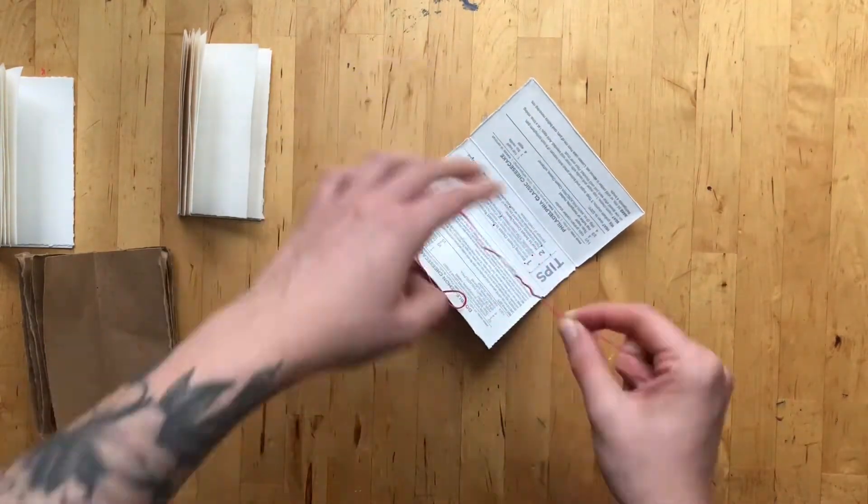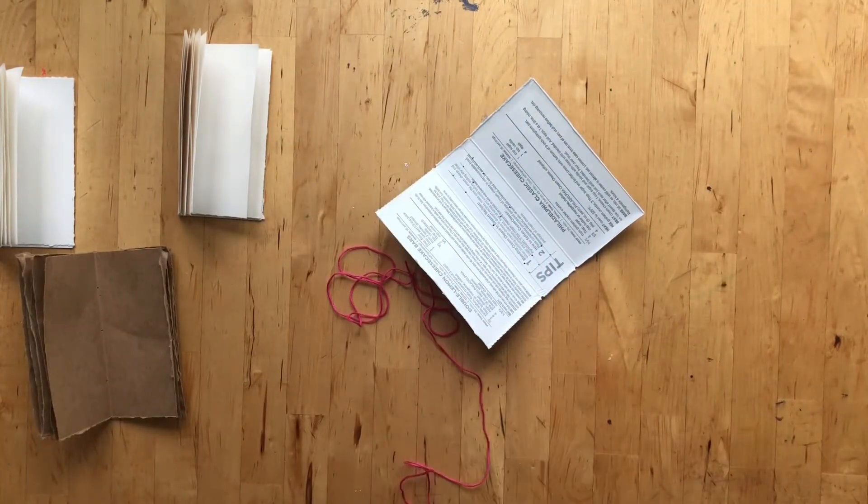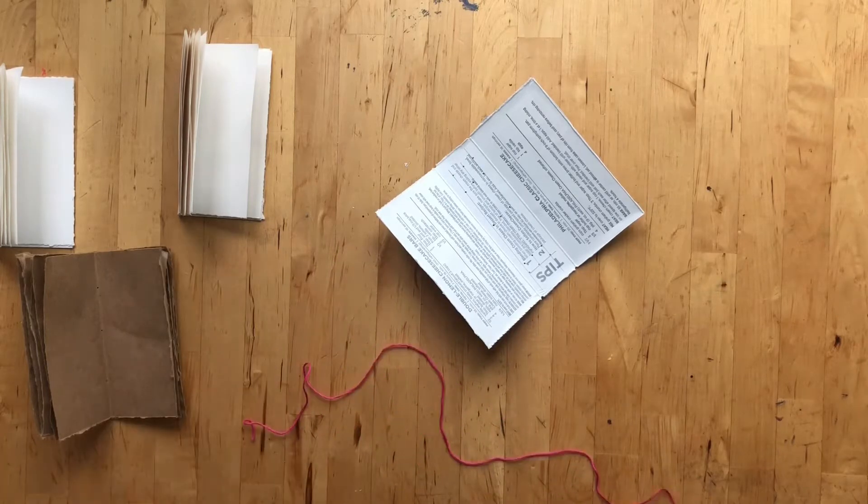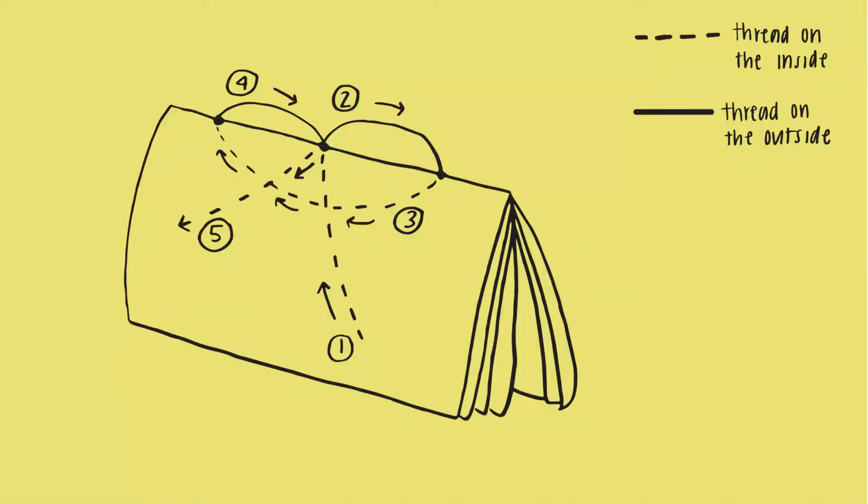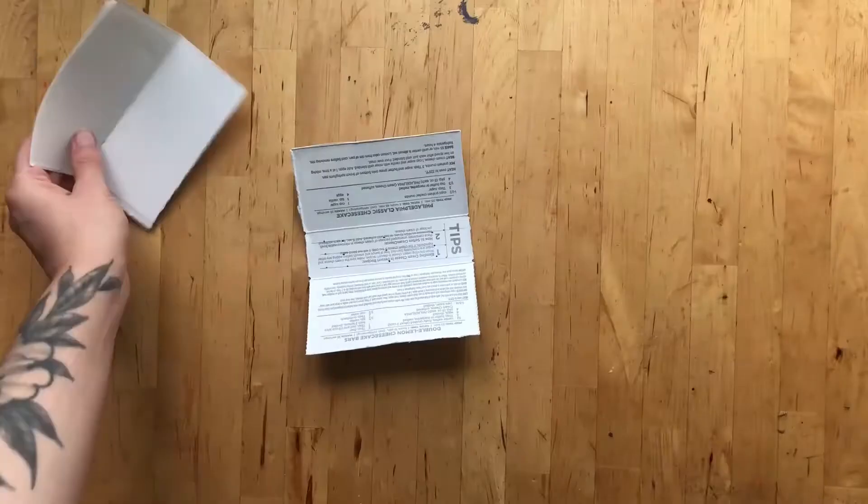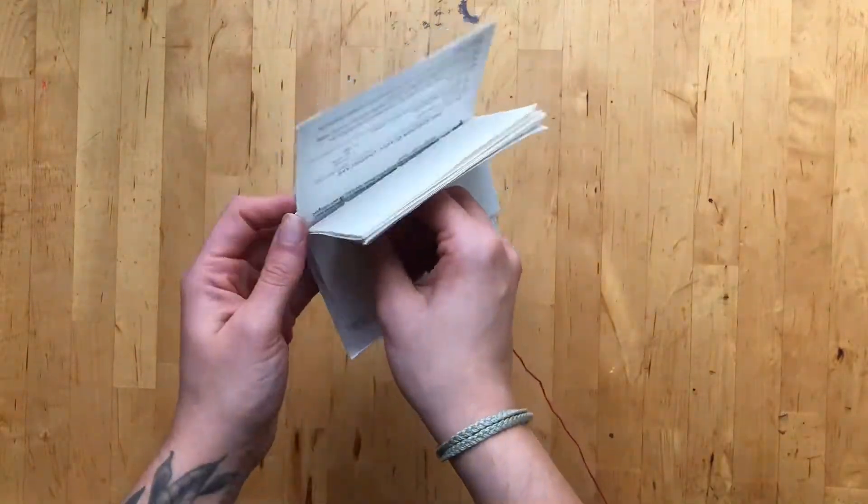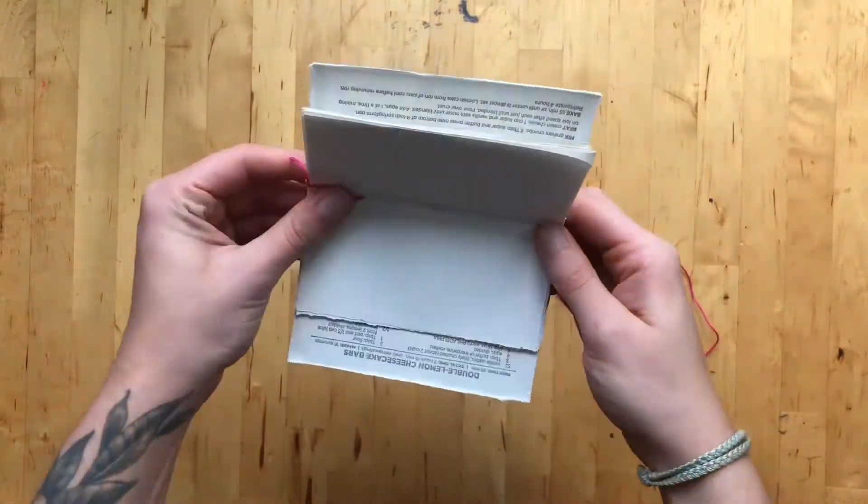Measure your thread or floss to three times the length of your cover and begin stitching each signature into the cover using the pamphlet stitch video and this picture as a guide. Take your time lining everything up and be sure to pull the string tight before tying it off.